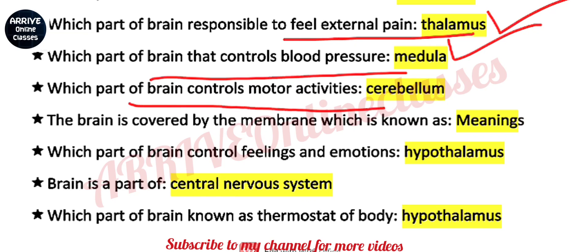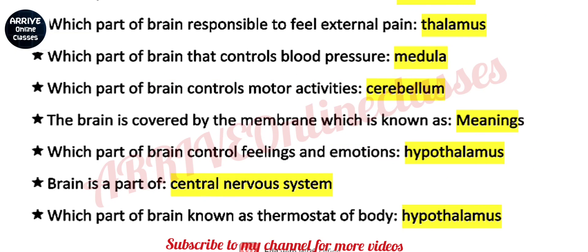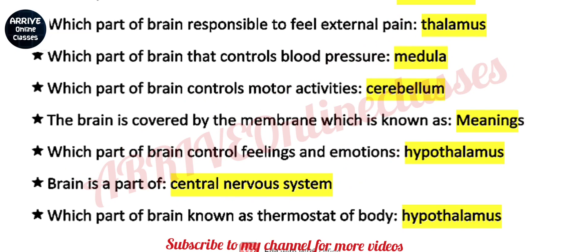Which part of brain controls motor activities? And which part of brain controls feelings and emotions? The answer is hypothalamus. Brain is a part of the central nervous system. Along with the brain, the spinal cord is also a part of the central nervous system. Brain plus spinal cord together form the central nervous system.